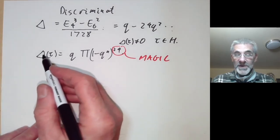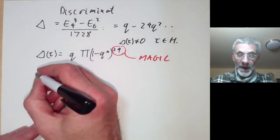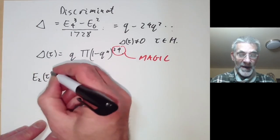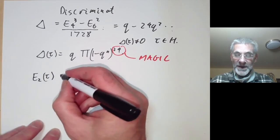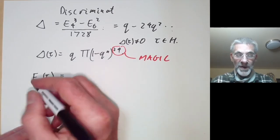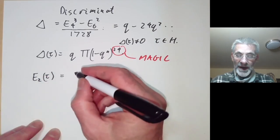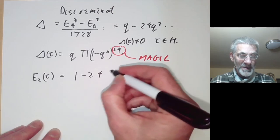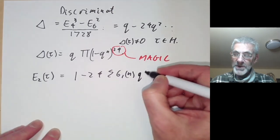The discriminant function is very closely related to the Eisenstein series E2(τ). We worked out the Fourier expansion of E4, E6, and so on. If we apply this for E2, we formally get that E2(τ) equals 1 minus 24 times the sum of σ₁(n) times q to the n.